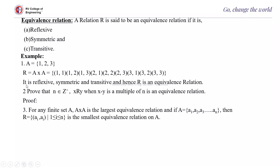Here it is reflexive since (1,1), (2,2), and (3,3) are present. It is symmetric since for every (a, b), (b, a) also belongs to the relation. And it is transitive since for every (a,b) in R and (b,c) in R, (a,c) belongs to R. Therefore, R is an equivalence relation.